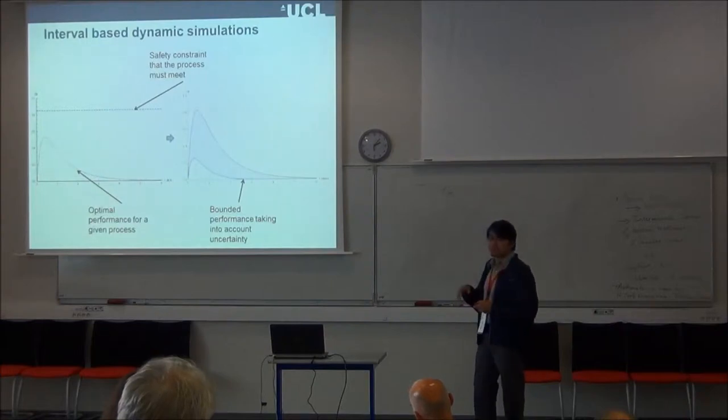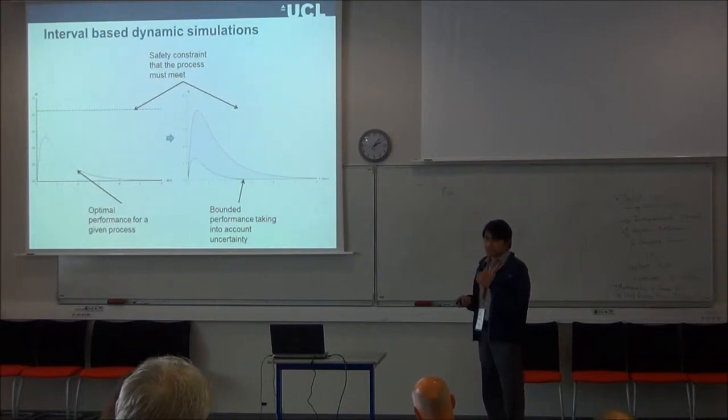Taking into account some level of uncertainty, so that we have now a range of these process models which are very useful for process design, because now we have a full range of decisions. And this process, of course, must meet this safety constraint.